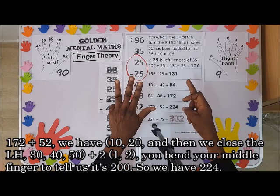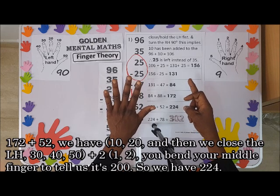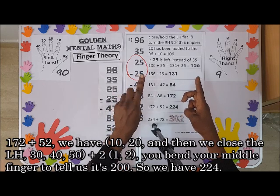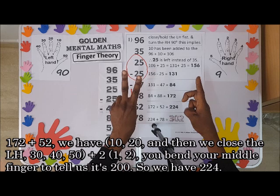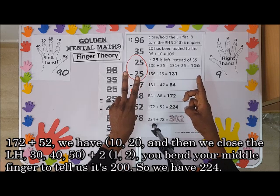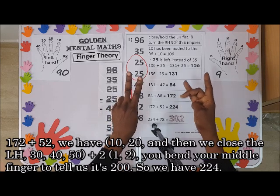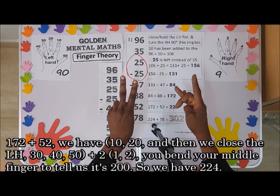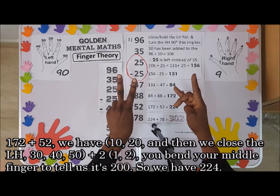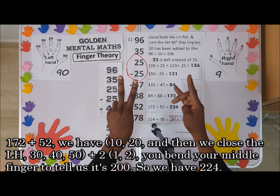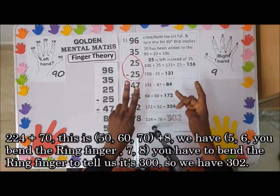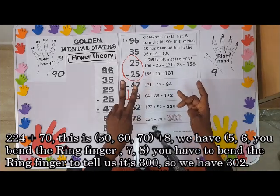We have 10, 20, and then we close here: 30, 40, 50, plus two. You bend this one to tell us it is two hundred. So we have two hundred and twenty-four. Two hundred and twenty-four.